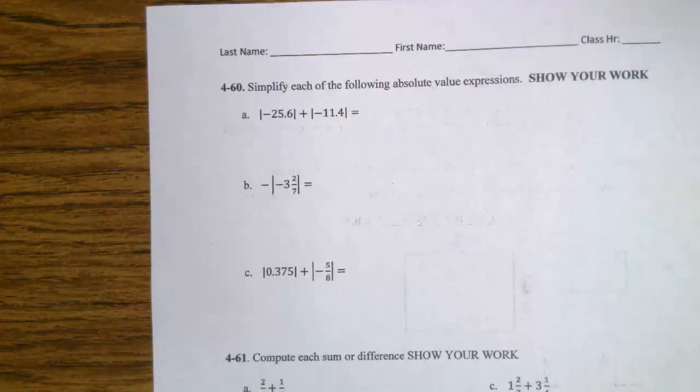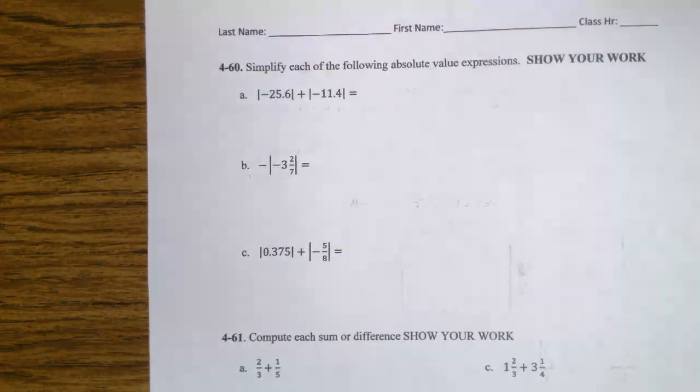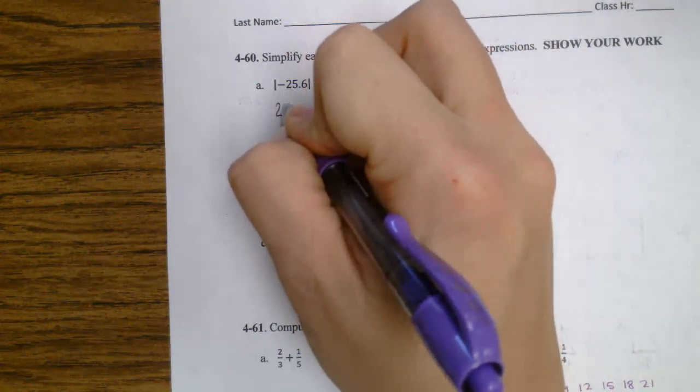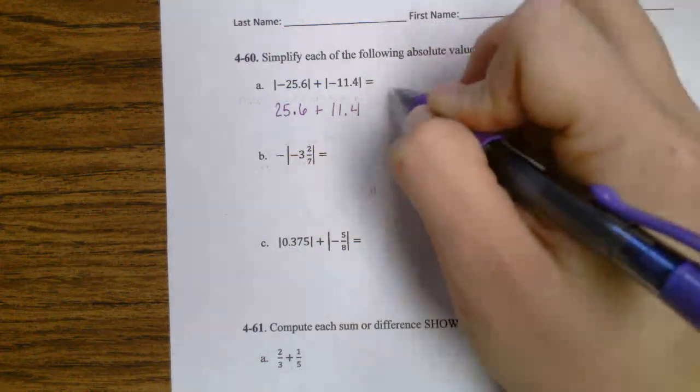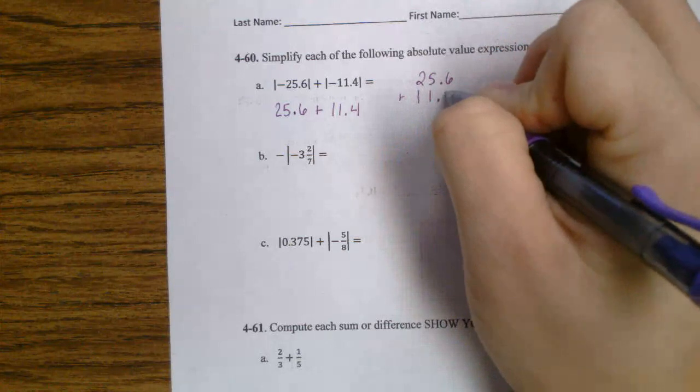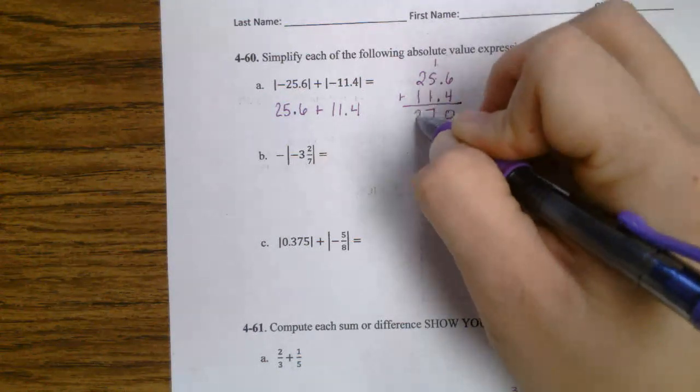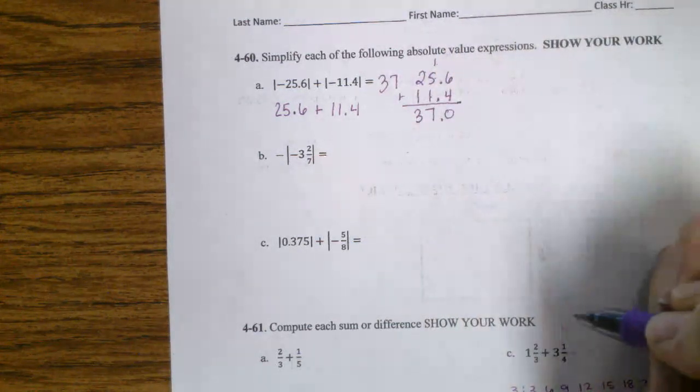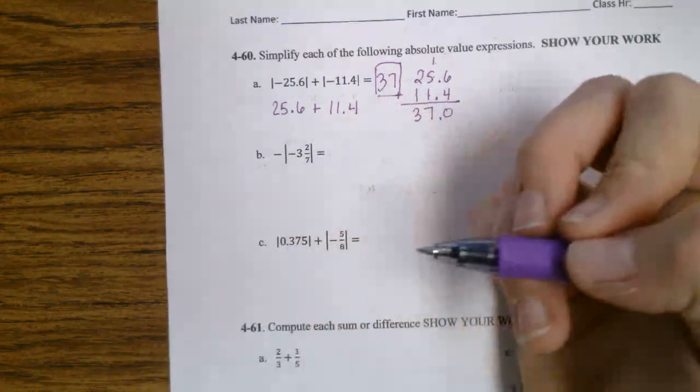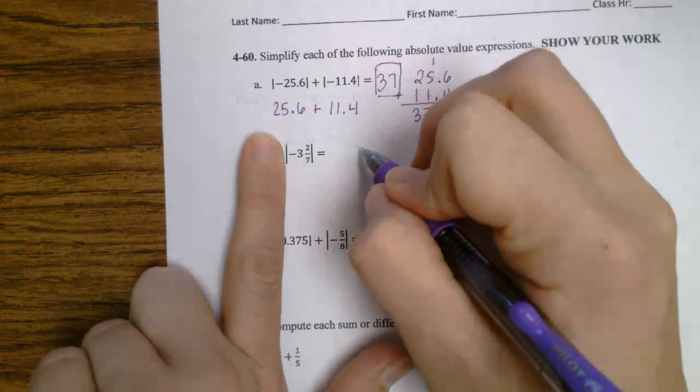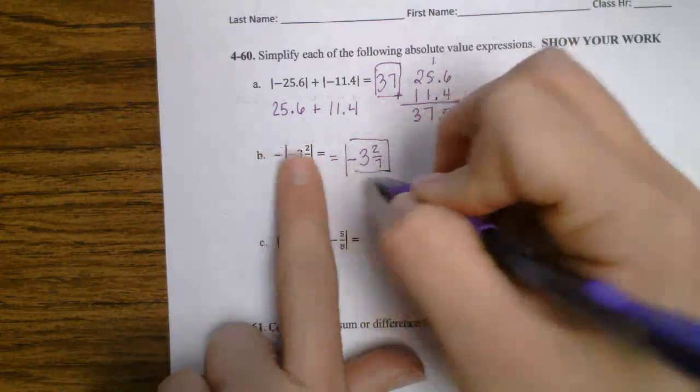On the back side, problem number 60. Simplify each of the following absolute value expressions. Show your work. First one. Absolute value of negative 25 and 6 tenths is 25 and 6 tenths. The absolute value of negative 11 and 4 tenths is 11 and 4 tenths. I add them together. 6 plus 4 is 10. 5 plus 1 plus 1 is 7. 2 plus 1 is 3. The answer is 37. The opposite of the absolute value of negative 3 and 2 sevenths. So what I do first is, well, what is the absolute value of negative 3 and 2 sevenths? It's 3 and 2 sevenths. What's the opposite of that?